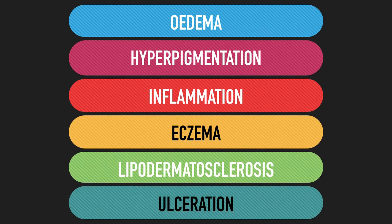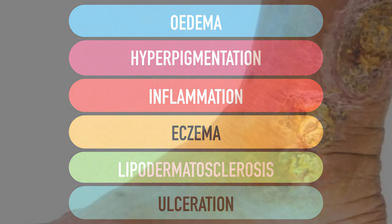All of these changes contribute to a relative reduction in perfusion of the skin. If this becomes substantial enough, an ulcer could develop. This skin ulcer is referred to as a venous ulcer, a venous stasis ulcer, or a chronic venous insufficiency ulcer.